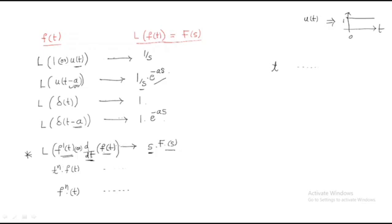Next we have the formula for t^n · f(t). This is a direct formula: L{t^n · f(t)} = (-1)^n · d^n F(s) / ds^n. So if we reverse the operation, differentiating F(s) n times with respect to s and multiplying by (-1)^n gives the Laplace transform of t^n · f(t).